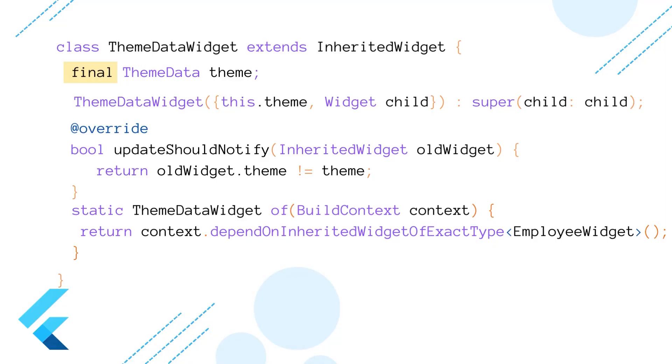Here you need to note one more thing: inherited widgets are immutable. Once they are created, they cannot be directly changed. However, you can update the data they hold by creating a new fresh instance of the inherited widget and placing it higher up in the widget tree. And the fact that something is final means it cannot be reassigned, but it does not mean it cannot be changed internally.